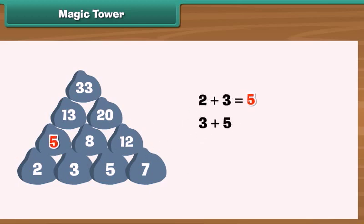3 plus 5 is equal to 8. 5 plus 7 is equal to 12. 5, 8 and 12 form the row above.